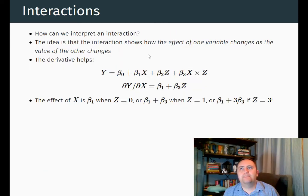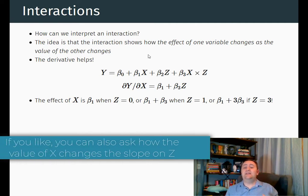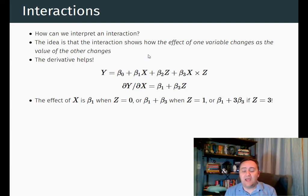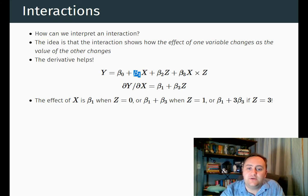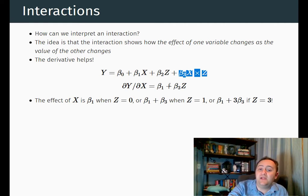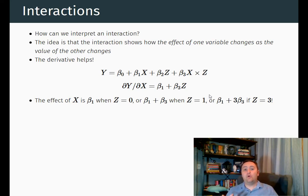So how can we actually interpret this? When we have an interaction term, the idea is we're getting the effect of one variable to change based on the value of another. A good way to think about this is to write out the equation and ask: what is the effect of x? We can take the derivative with respect to x, or just look at what x is being multiplied by. When x increases by 1, y increases by beta 1, and it also increases by beta 3 times z. So the effect of a one unit increase in x is not just beta 1 — it's beta 1 plus beta 3 times z. The effect of x depends on the value of z. We should always consider all the coefficients together when we have an interaction term, as opposed to considering them independently.